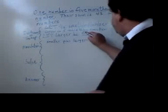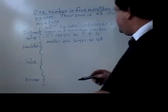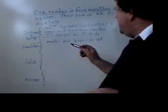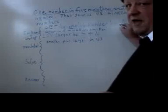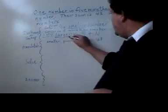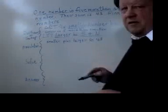Five more than smaller. So whenever I see the word smaller, I'm going to translate it as N. Whenever I see the word larger, I'm going to translate it as five plus N.